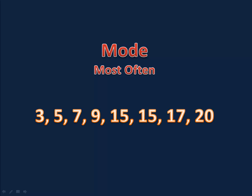Finally, the mode. The mode is simply the number, or the item, that came up the most often. In our data set here, we have two number 15s. Because that shows up more often than any other number, we say that the mode is 15.